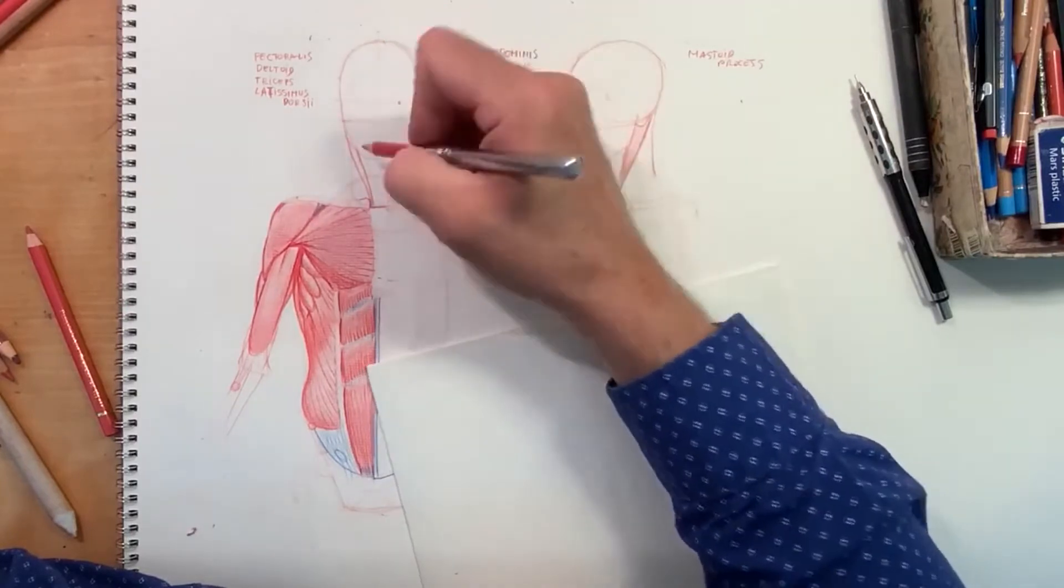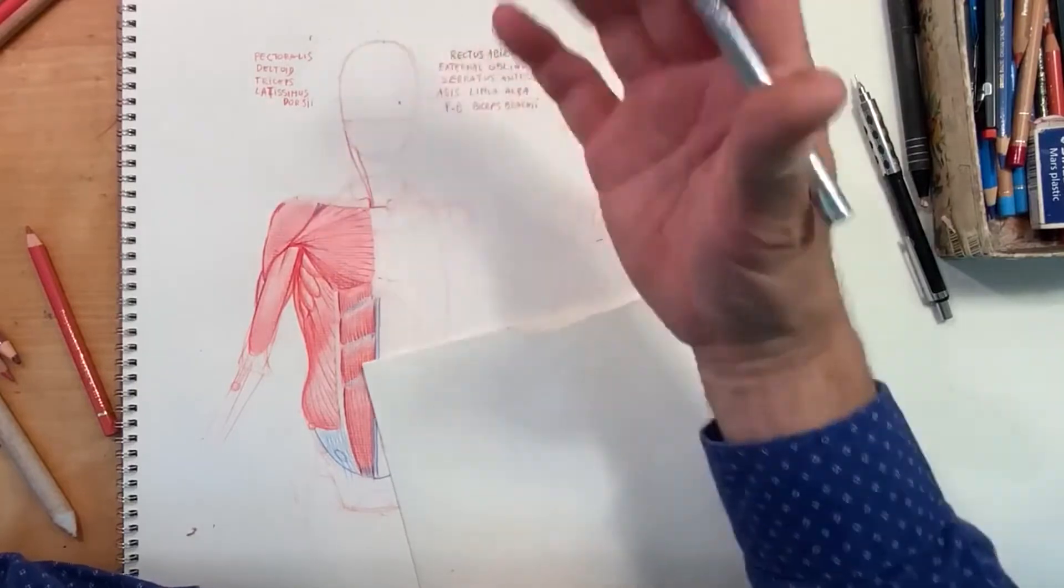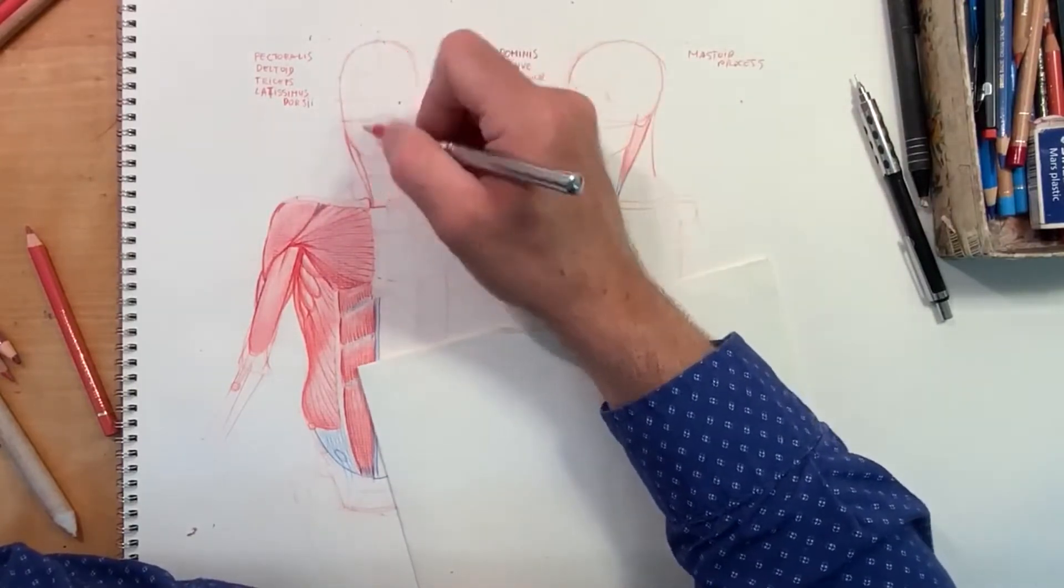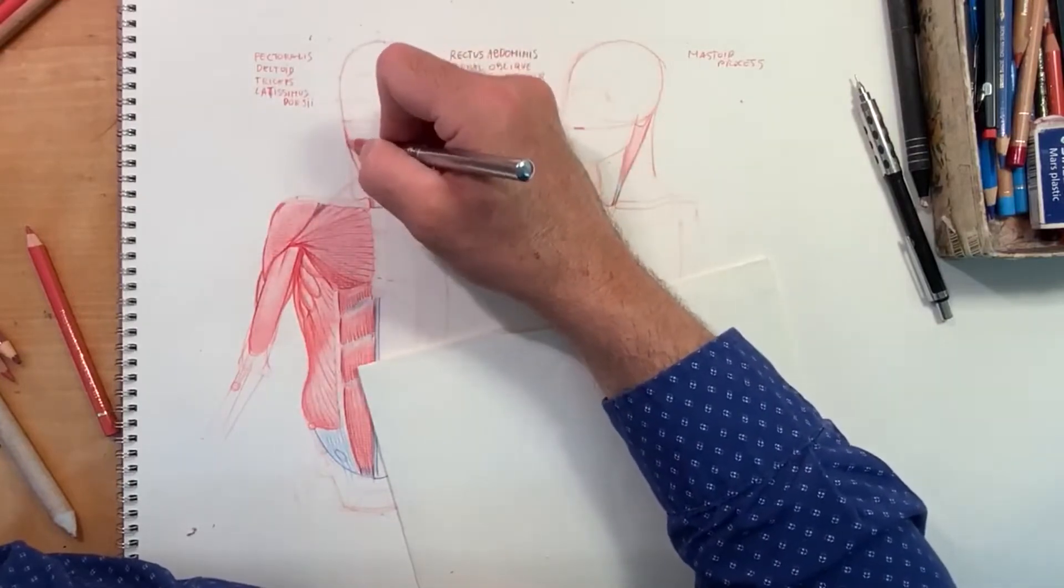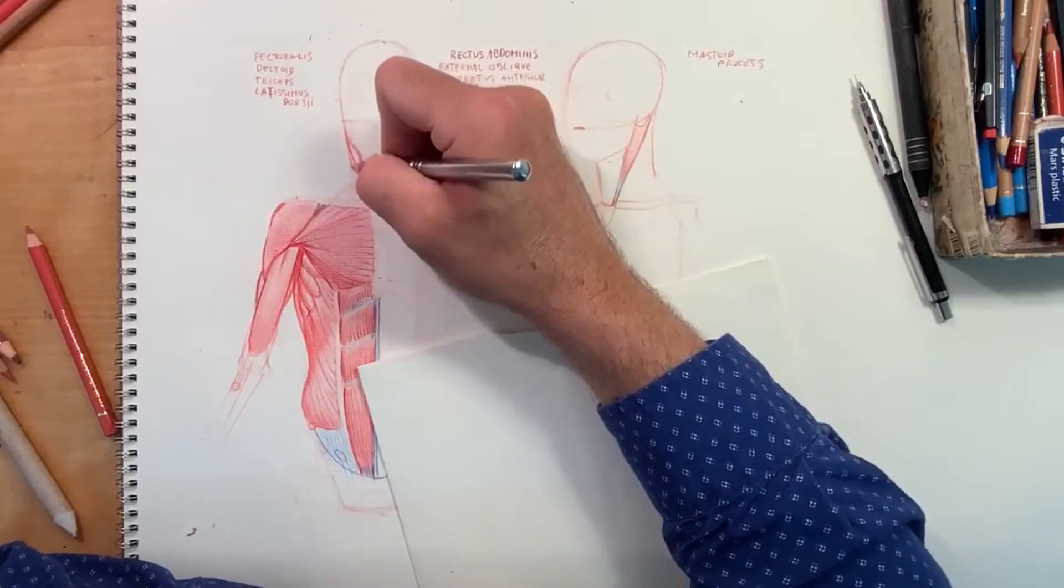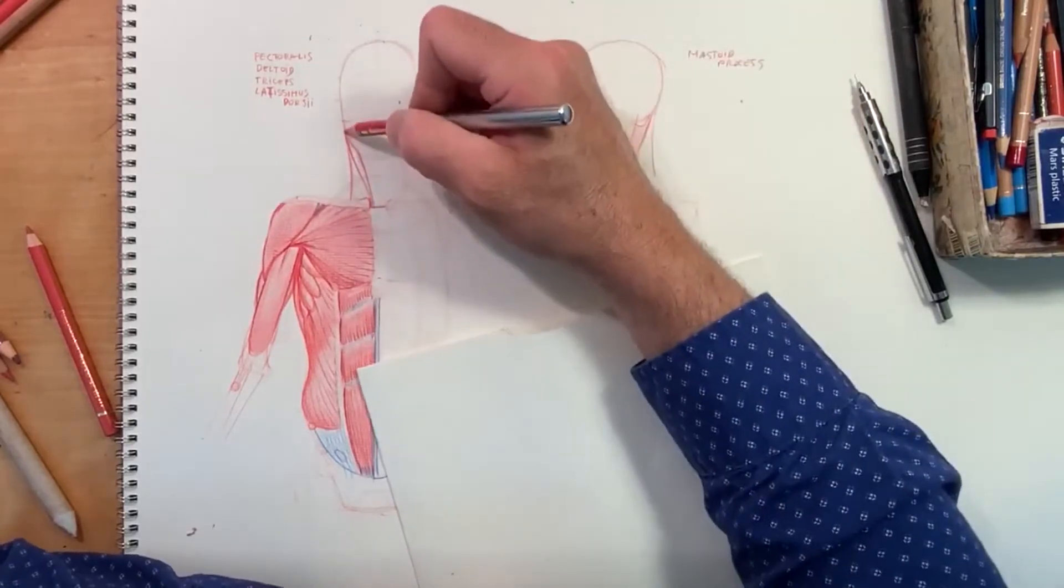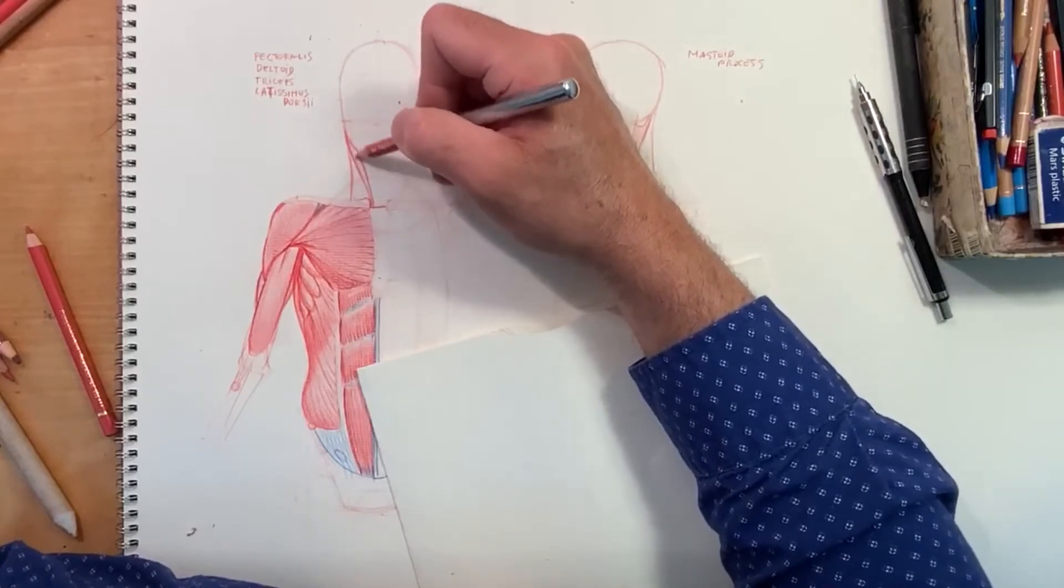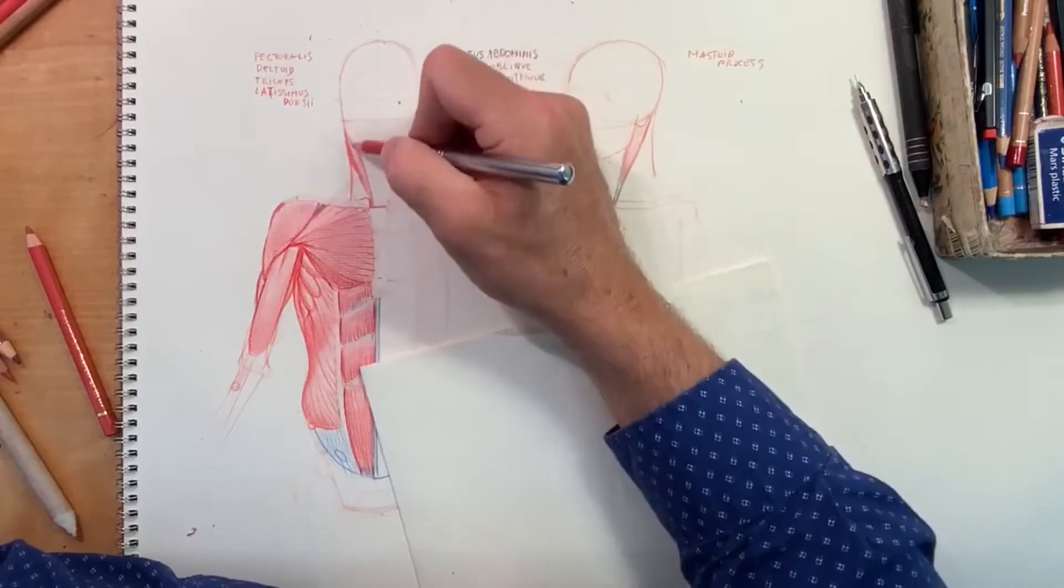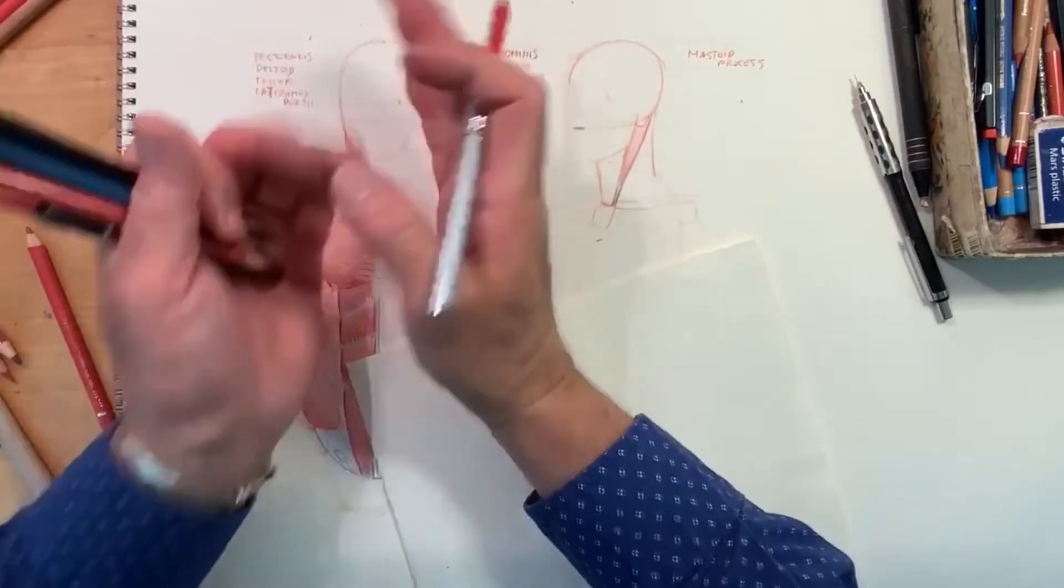When this muscle is really big, it tends to protrude past the jawline. You look at big, burly people with a thick neck. You're going to see this muscle massive sometimes, like football players or wrestlers. That muscle is really thick, and it's going to give you a sense of strength because the neck is so massive.